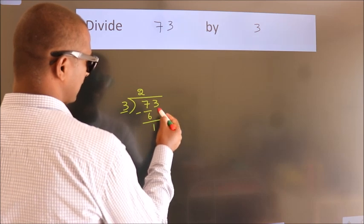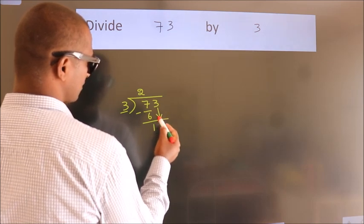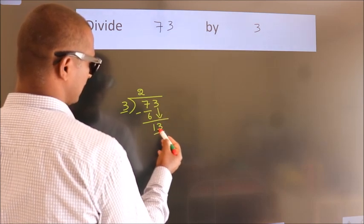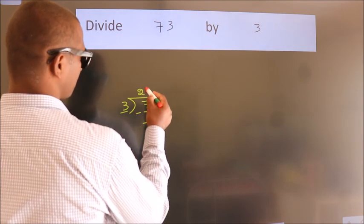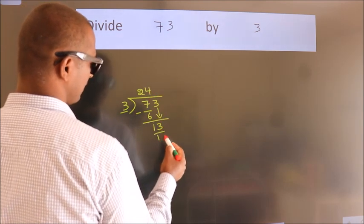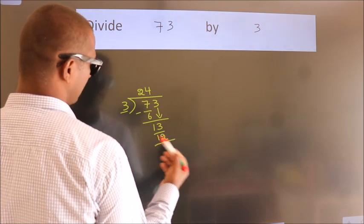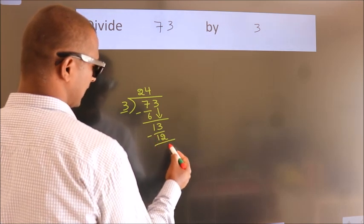After this, bring down the next number, so 3 down, making 13. A number close to 13 in the 3 table is 3 times 4 equals 12. Now, we subtract and get 1.